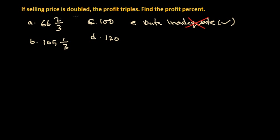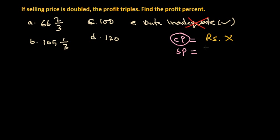Here we go. We're talking about cost price and selling price. To find profit, we need the cost price. So let's assume the cost price is rupees x and the selling price is rupees y.